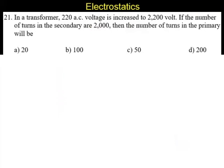Question number 21. In a transformer, 220 volts AC voltage is increased to 2200 volts. If the number of turns in the secondary are 2000, then the number of turns in the primary will be. The alternatives are 20, 100, 50, and the last choice 200.